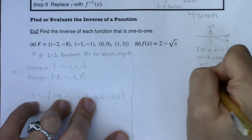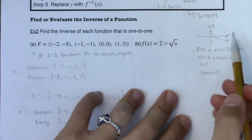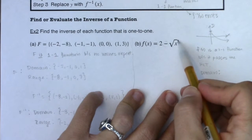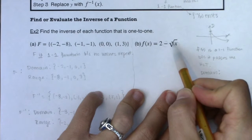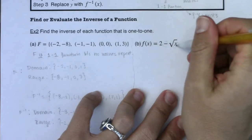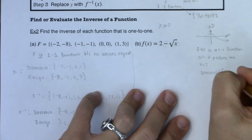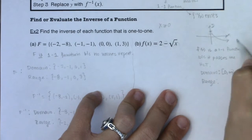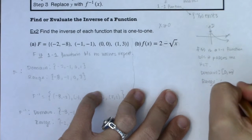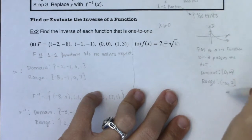Let's talk about its domain and range. It's always a good idea when dealing with functions to figure out their domains and ranges first. I don't have a fraction, but I do have a radical with an even index, so I need that radicand to be positive. In order for my radicand to be positive or zero, I need x to be greater than or equal to zero. So my domain is going to be zero to infinity. If I look at my range, I'm going down forever, and I go all the way up to a y-value of 2. So my range is going to be negative infinity to positive 2.